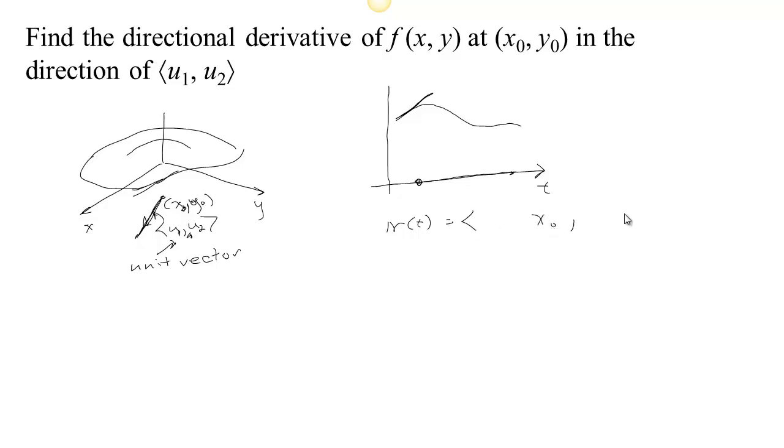So we need to parametrize a curve that starts at x₀ and goes in the direction of ⟨u₁, u₂⟩. So we're going to start at x₀ and we're going to take u₁ times t and u₂ times t. So there's our parametrization. Do you agree when t = 0, then we're at the location of interest.